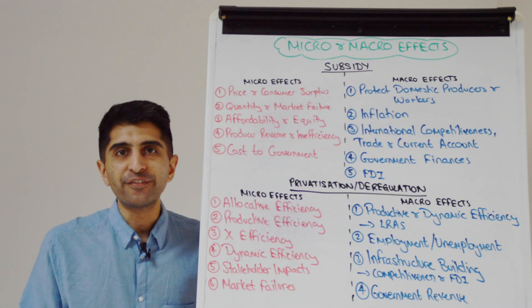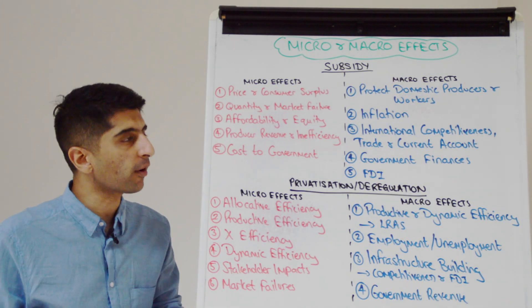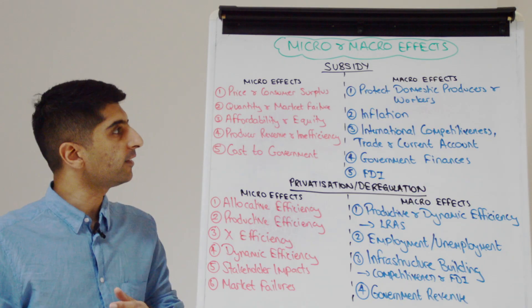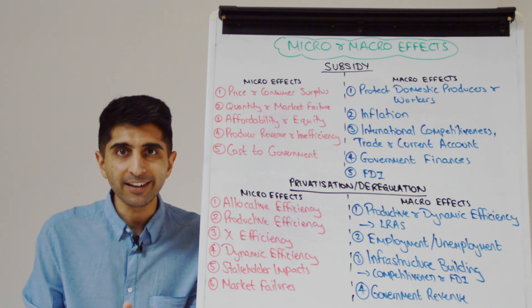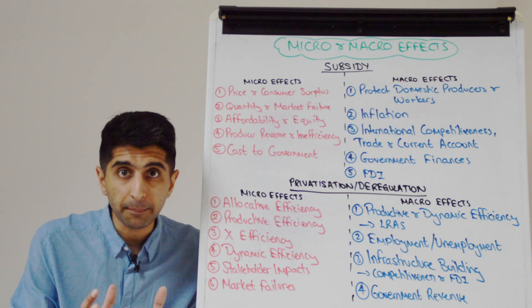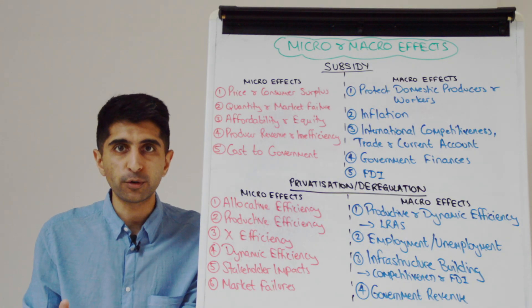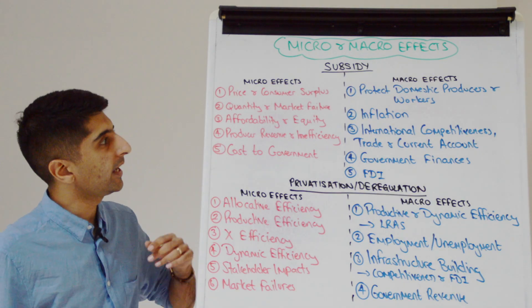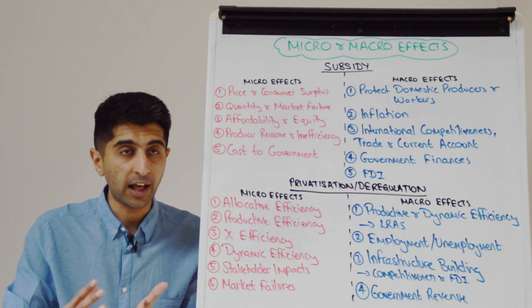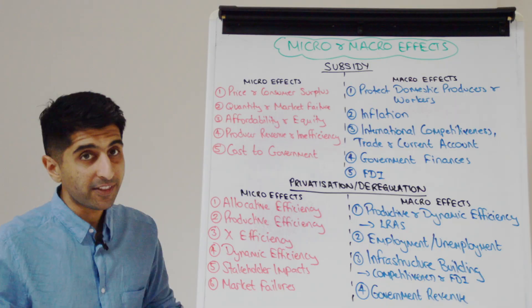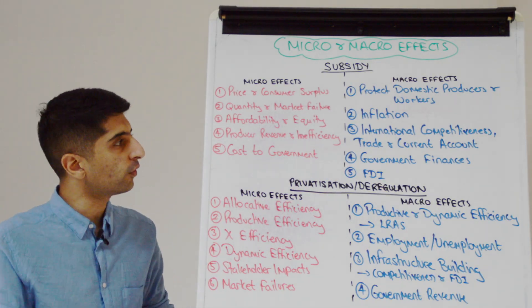Let's look at a subsidy. The micro effects are very clear: a subsidy reduces price by reducing cost of production, which increases consumer surplus. It also increases quantity and can therefore deal with market failures where quantity is too low — for example, where there are positive externalities. It also improves affordability and equity for essential goods and services like education and healthcare.